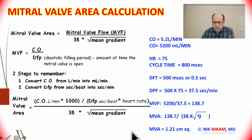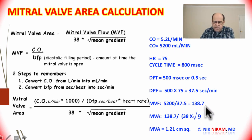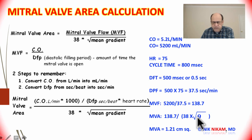In one more example, we have a cardiac output of 5200 ml per minute, a heart rate of 75, and a mitral gradient of approximately 9 mmHg. That gives us a valve area of 1.21 centimeters squared.